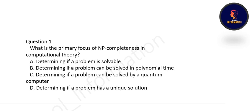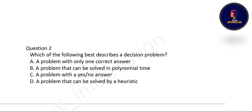Is it: determining if the problem is solvable, determining if a problem can be solved in polynomial time, determining if a problem can be solved by a quantum computer, or determining if a problem has a unique solution? The correct option is option B: determining if a problem can be solved in polynomial time.